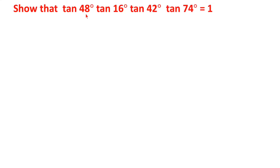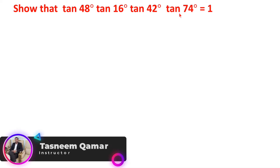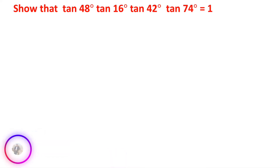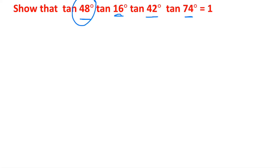We need to show that tan(48°) × tan(16°) × tan(42°) × tan(74°) equals 1. If we observe, 48° and 42° are complementary angles — their sum is 90°. Similarly, 16° and 74° are complementary. So we have two pairs of complementary angles, and we need to convert one angle in each pair using the complementary angle identity.